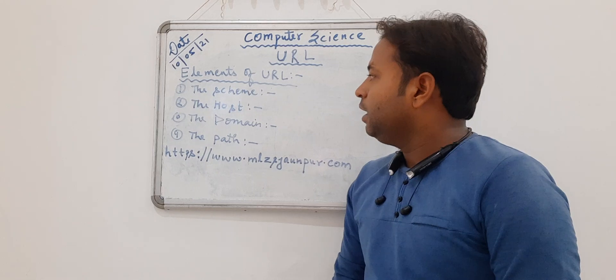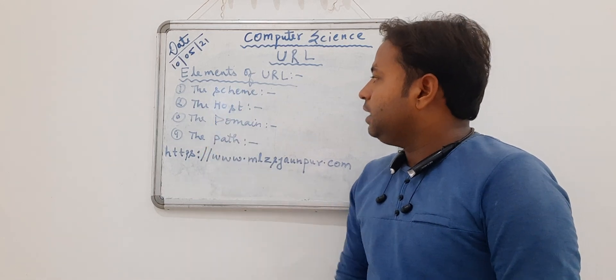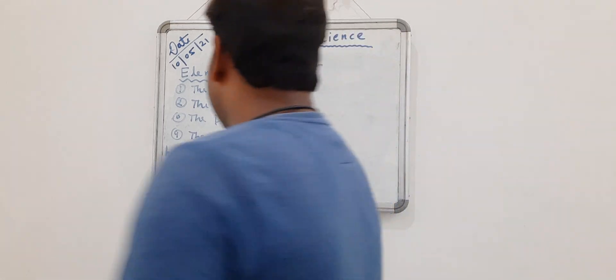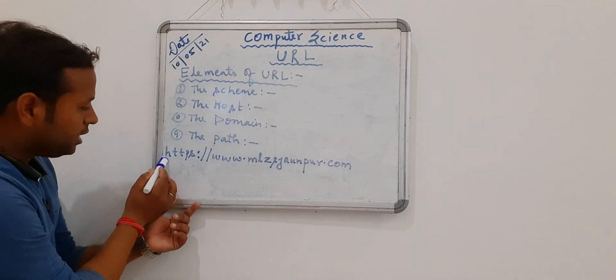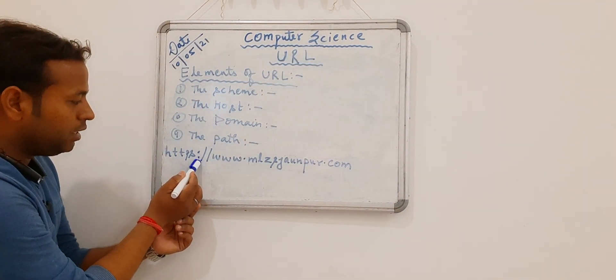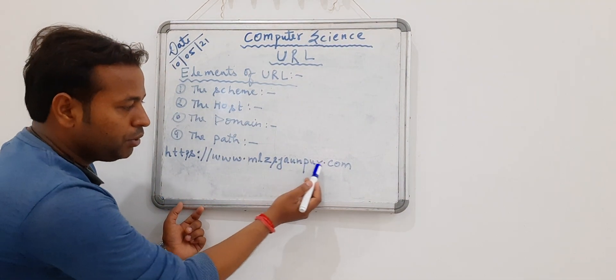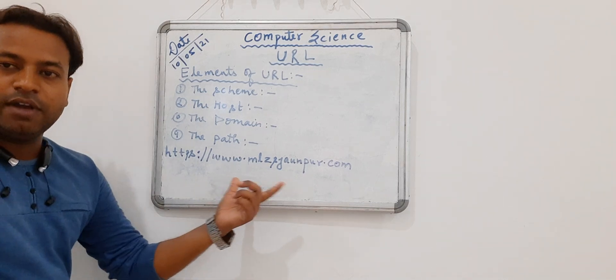So first part of element, first part of URL is Scheme. What is Scheme? Suppose that I have taken one website here, that is one website.